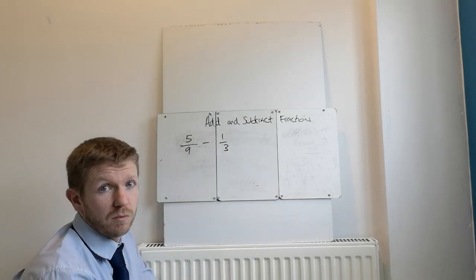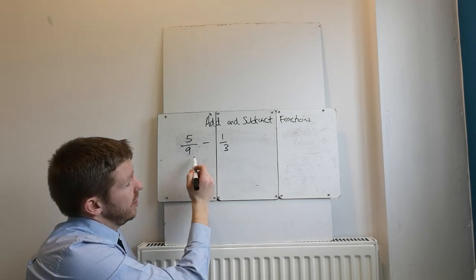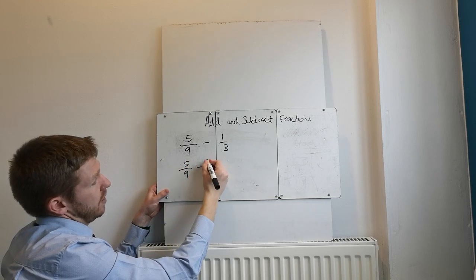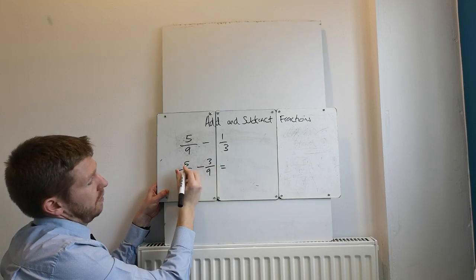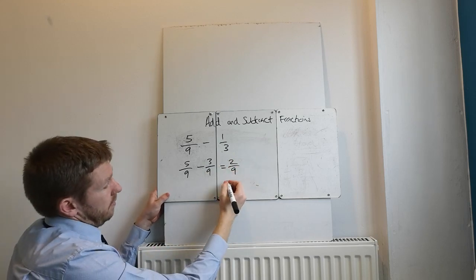3 and 9, you could multiply them, get a denominator of 27. Or you could realise that the lowest common multiple of 3 and 9 is 9. So you could do 5 over 9 take away 3 over 9. 5 take away 3, 2. 2 ninths.